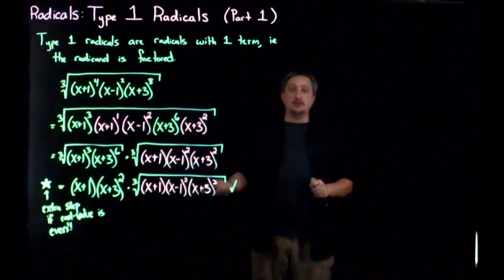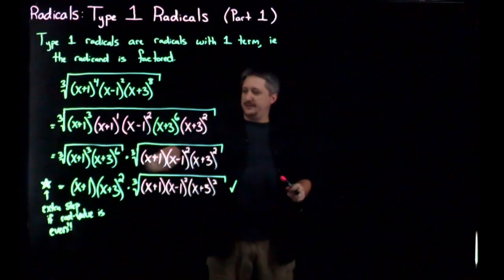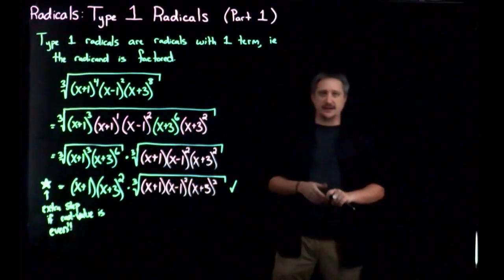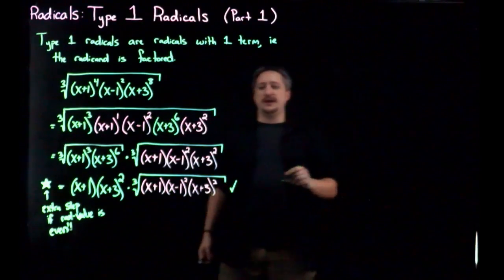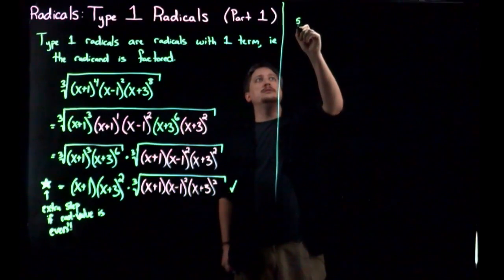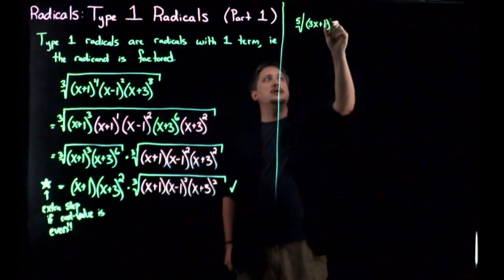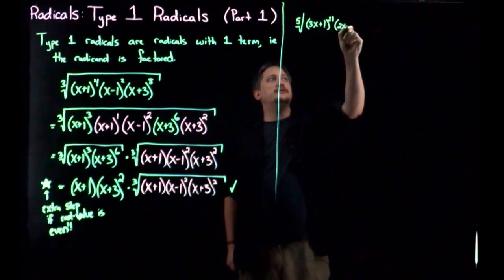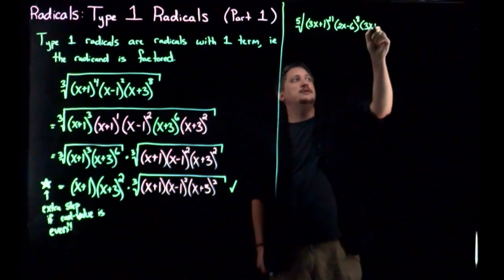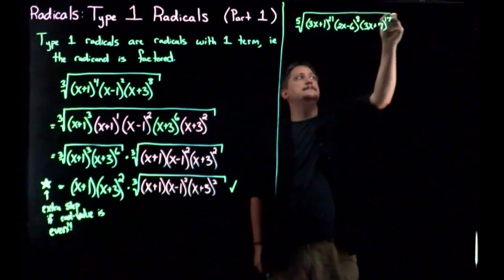Let's do one more example. This is exactly the process all the way down to this level. It's the same whether it's even or odd. It's just going from here to the next step, the even ones have an extra step. So let's look at the fifth root of 3x plus 1 to the 21st, 2x minus 6 to the 8th, and 3x plus 7 to the 17th.